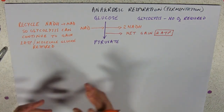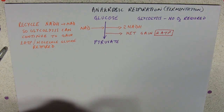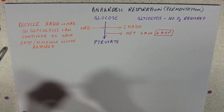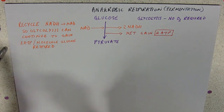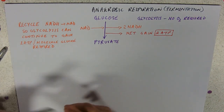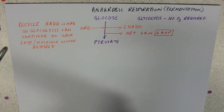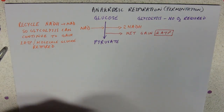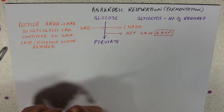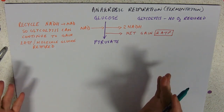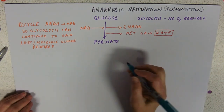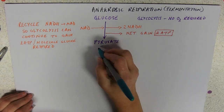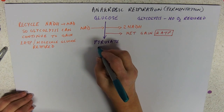You just carry on gaining some ATP, just not the 38 that you might want. There are two sorts of anaerobic respiration pathways — we'll start with the easy one.